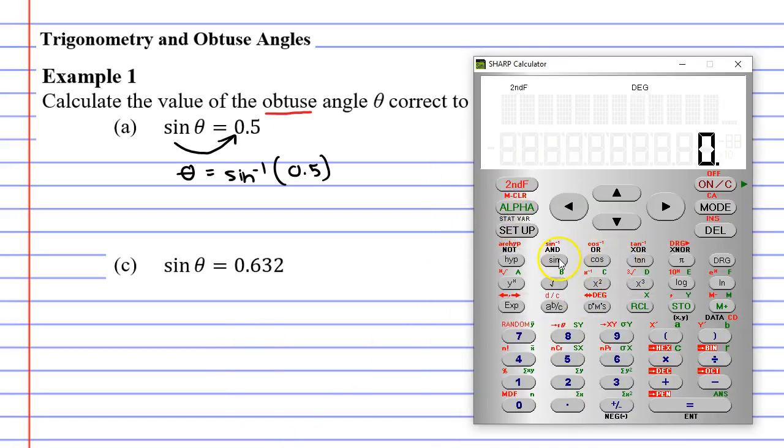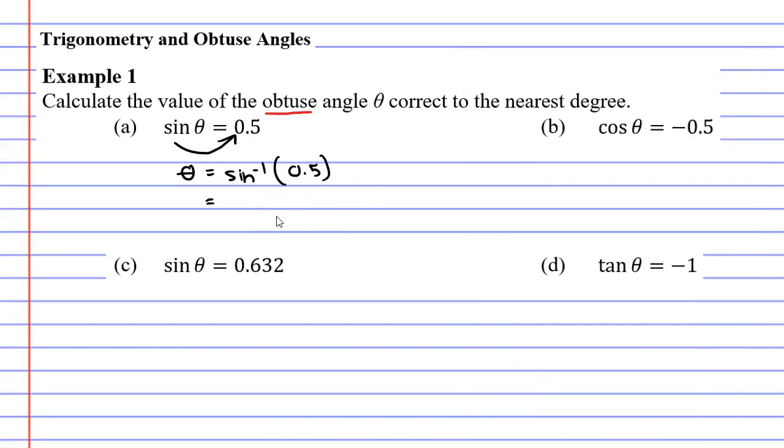Second function sine bracket 0.5 close our brackets equals and we get 30. So in this particular case theta equals 30 degrees. Now you might notice that 30 degrees is not an obtuse angle, it's an acute angle because it's an angle between 0 and 90 degrees.